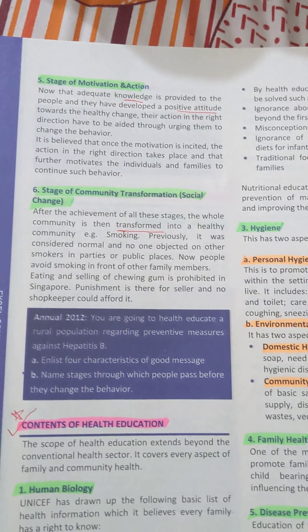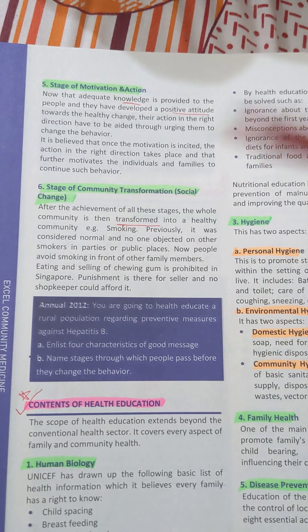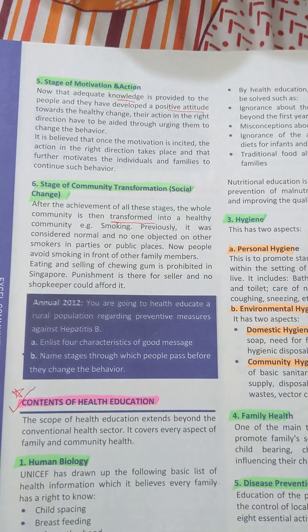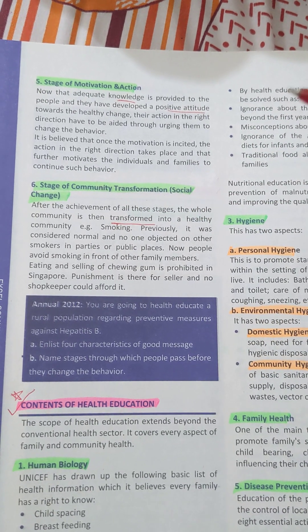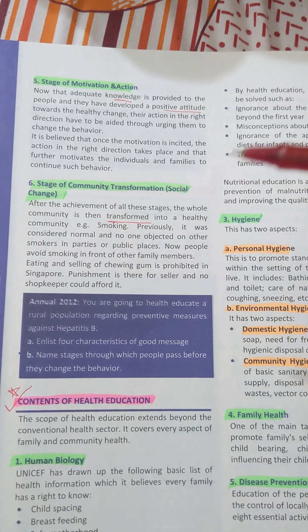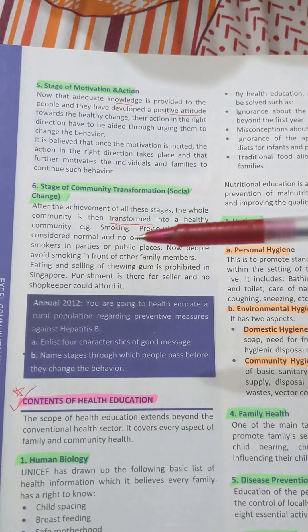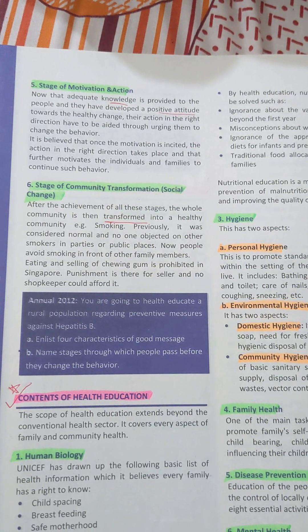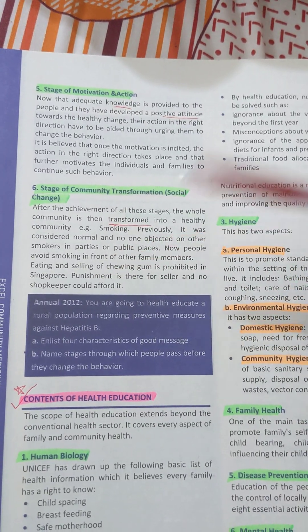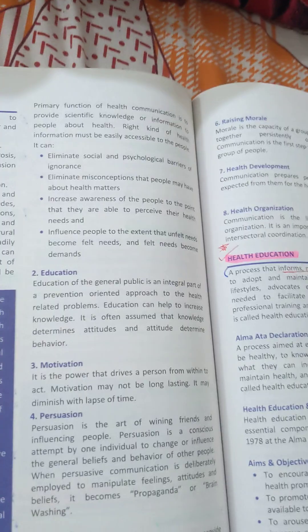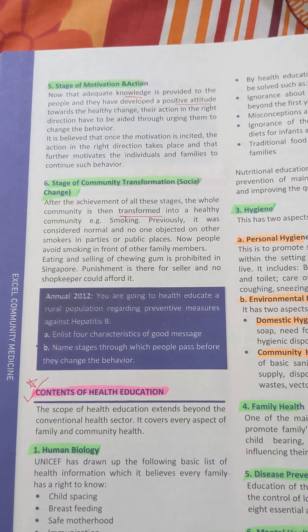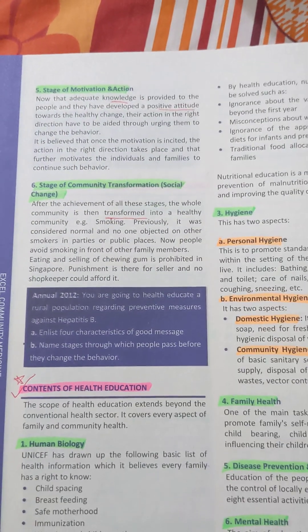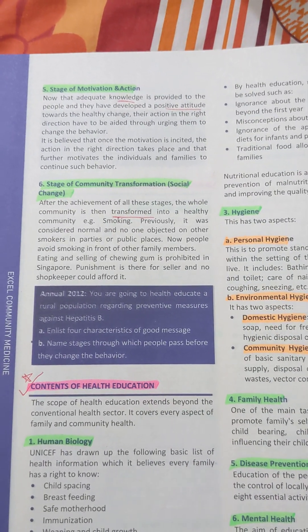Stage six is the stage of community transformation and social change. After the achievement of all these stages, the whole community is transformed into a healthy community. For example, regarding smoking, previously it was considered normal and no one objected to other smokers in parties or public places, but now people avoid smoking in front of family members. Similarly, eating and selling of chewing tobacco is prohibited in Singapore as a result of social transformation. So these were the six stages of health education: sensitization, publicity, education, attitude change, motivation and action, and community transformation and social change.